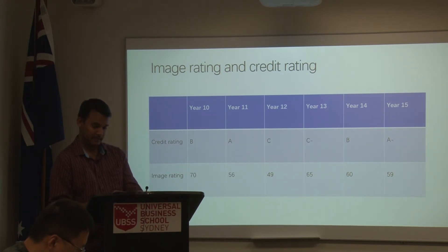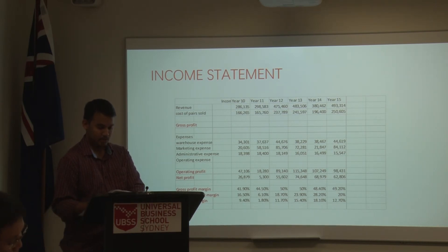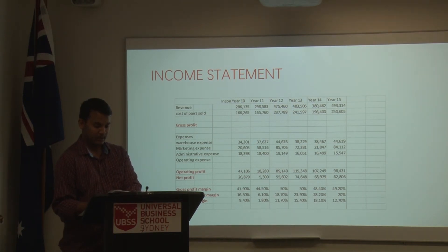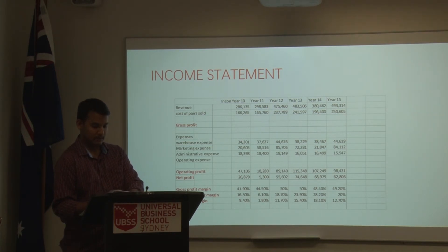Moving on to the income statement — the revenue in year 10 is 2.86 million, and we gained profit in the next five years, ending up with 4.93 million in year 15. The cost of goods sold in year 10 is 1.6 million and ended up with 2.5 million. The gross profit and various expenses include warehouse expense at 34,301 ending up with 44,690.